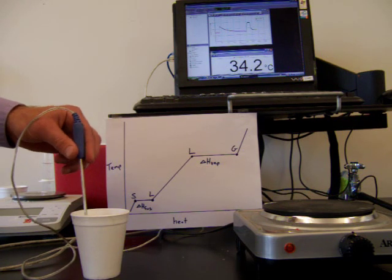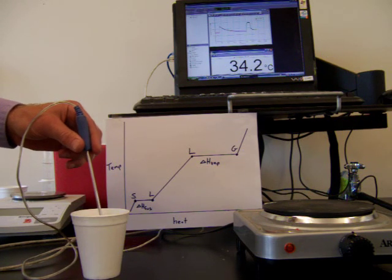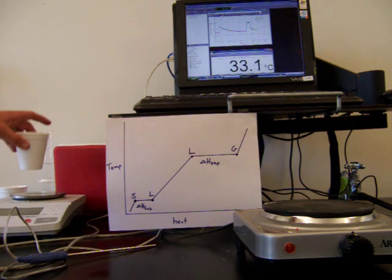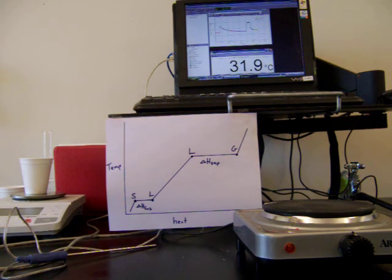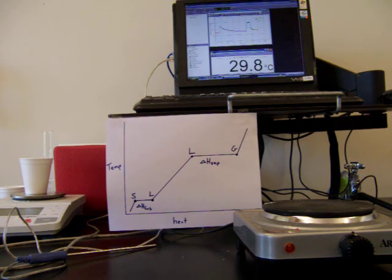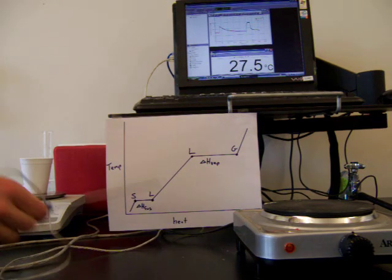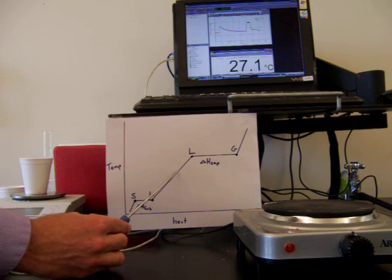So 34.3 degrees Celsius is the final temperature of both the ice and the warm water. I'm going to take this now and set it on our balance again. It now has a mass of 130.79 grams. You can subtract to find out how much ice was added — we know the original mass of the water and the mass after the ice was added, so we can subtract to figure out how much ice was added.